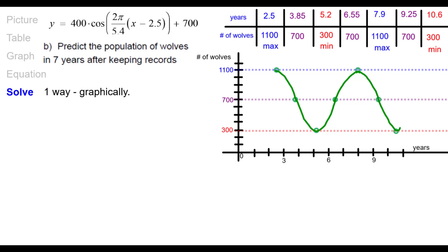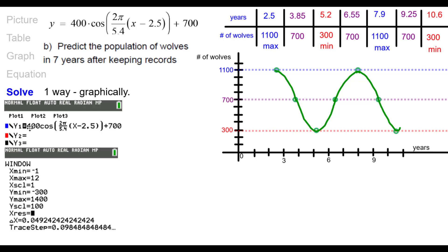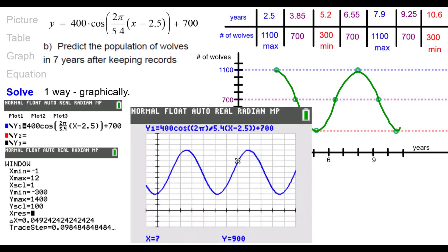We want to predict the population of wolves seven years after keeping records. So there's several ways to do this. We're going to illustrate all of them. So one way is graphically. If you go ahead and into your graphing calculator, type in the equation and then create a window so that you can see it okay, similar to this window right here. And when I graph it, this is what I get. I did put in grid lines so I could see it. Yours might not have grid lines and that's okay. And then I can trace to seven. When x is seven, I get the y value of 900 wolves. Pause as needed.